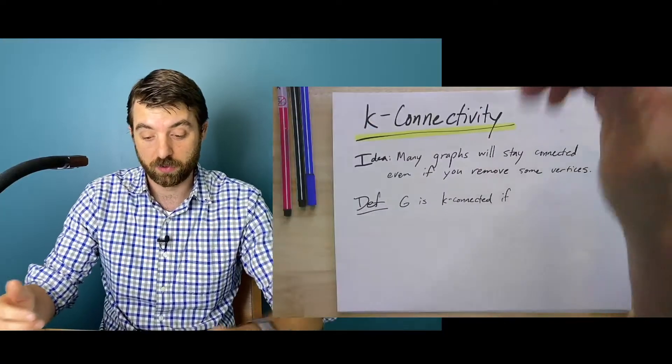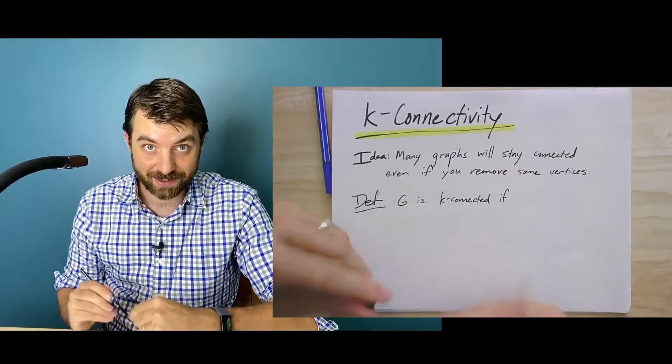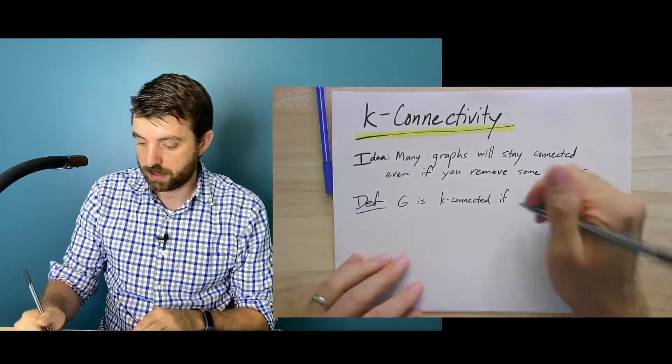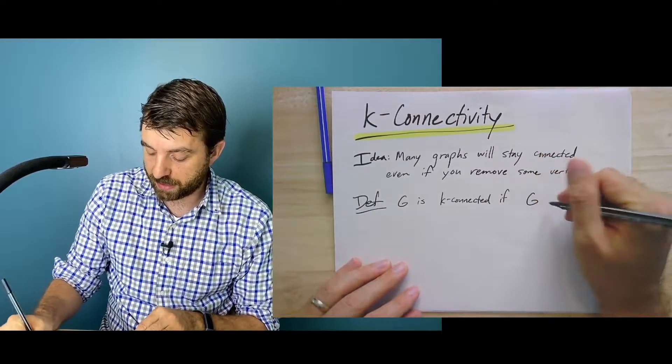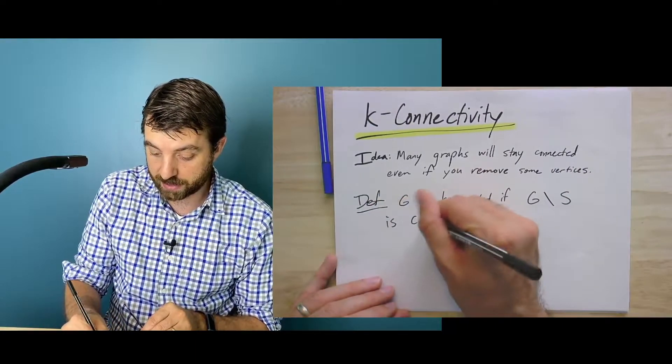The technical term for this is K-connectivity. Formally, a graph is K-connected if I take that graph and subtract out some subset of vertices and it's still connected.